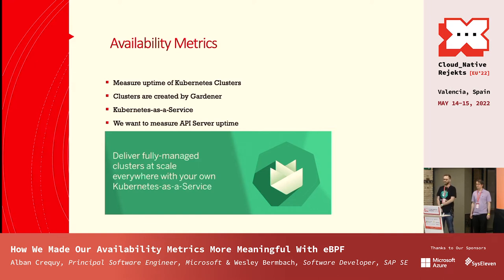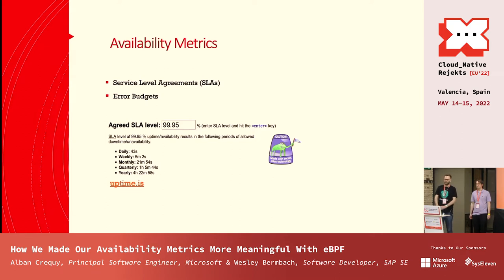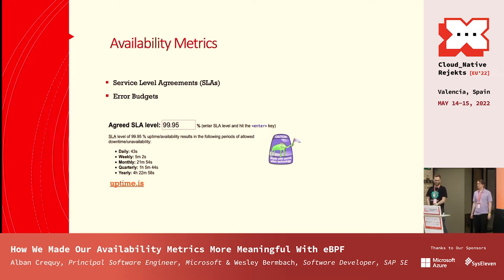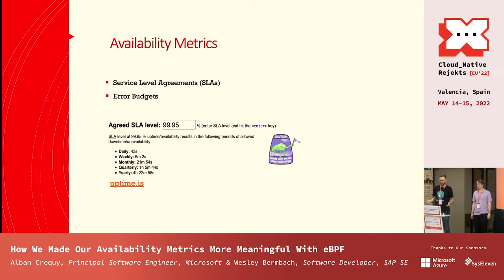What we want to do is measure the API server uptime of these clusters to gauge how good our service is and make those metrics more meaningful. One important concept to define first is SLAs, or service level agreements. For example, a target SLA of 99.95% means Gardener, as the service provider, commits to that level of uptime for the internal departments consuming Kubernetes clusters.